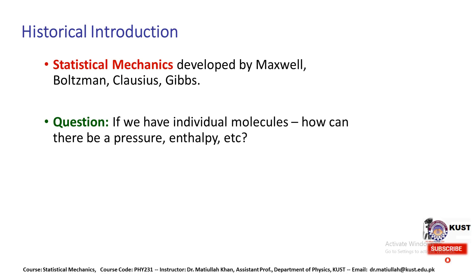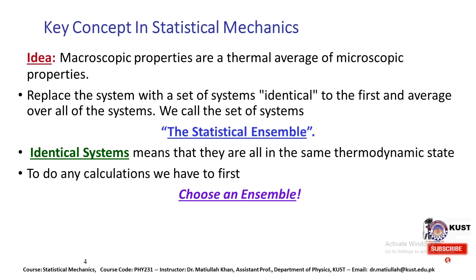First we come across the historical introduction of Statistical Mechanics, which has been developed by Maxwell, Boltzmann, Clausius, and Gibbs. The question arises that if we have an individual molecule, how there will be pressure or enthalpy and how we can treat the system. The idea behind Statistical Mechanics is the Microscopic Properties, or a thermal average of the Microscopic Properties.